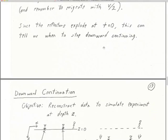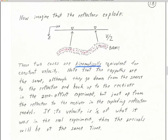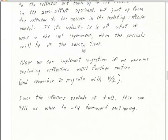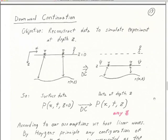Since the reflectors explode at time t equals zero, that's when we stop downward continuing. We stop downward continuing at t equals zero, and at that point the data should be collapsed back on the reflector. That's the imaging condition — we've got half of migration wired. The other half is downward continuation.